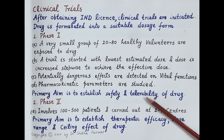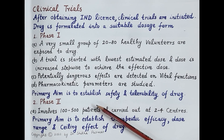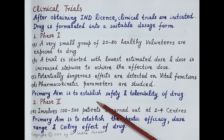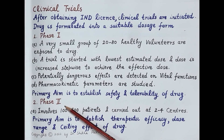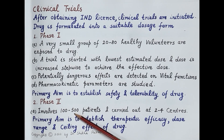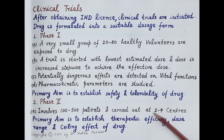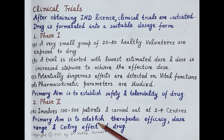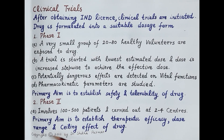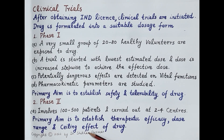Candidates that do not exhibit the desired level of safety and tolerability are dropped at this stage. Drug candidates found to be safe and tolerable are further screened in Phase 2 clinical trials. Phase 2 clinical trials involve 100 to 500 patients and are carried out in two to four centers. The primary aim of Phase 2 studies is to evaluate and establish therapeutic efficacy, dose range, and ceiling effect of the potential drug candidates.